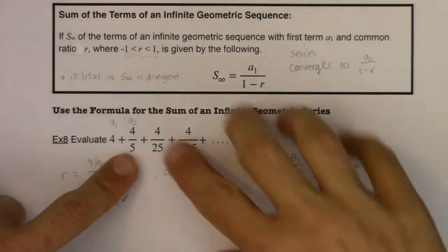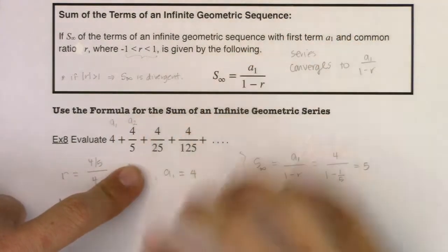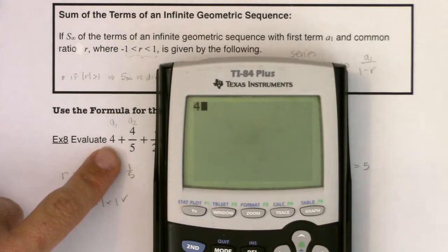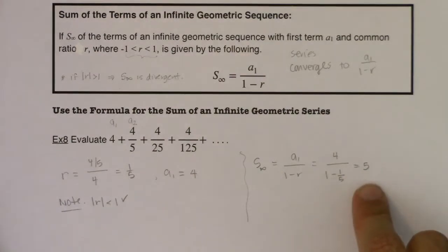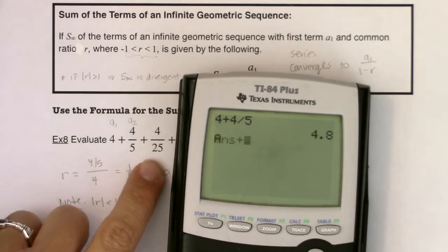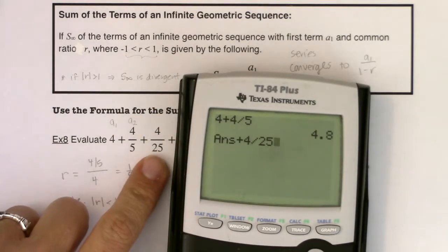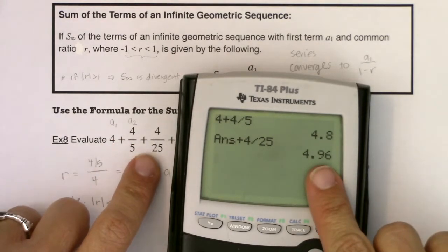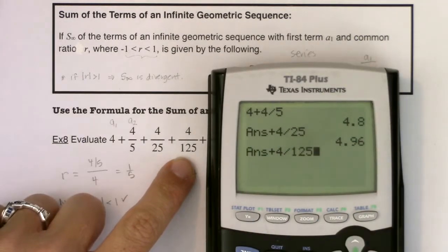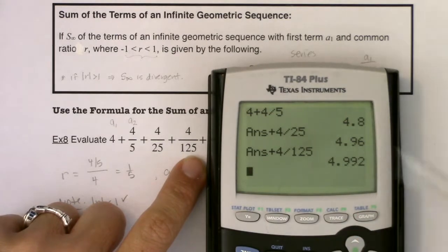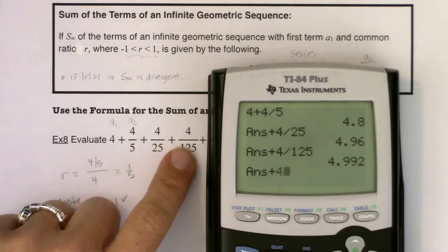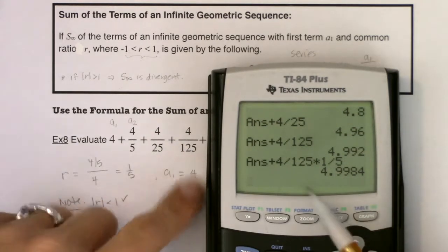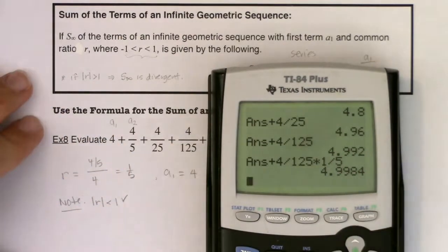Let's step back and see what's going on. Instead of adding infinitely many terms right away, let's add just the first two: 4 plus 4/5 equals 4.8 — not quite 5. If I add the next term, 4/25, I get s sub 3, and we're a little bit closer to 5. Adding 4/125 gives s sub 4, even closer. If I added the next term, 4/125 times 1/5, I get even closer to 5. So s sub 2, s sub 3, s sub 4 — each one gets closer and closer.